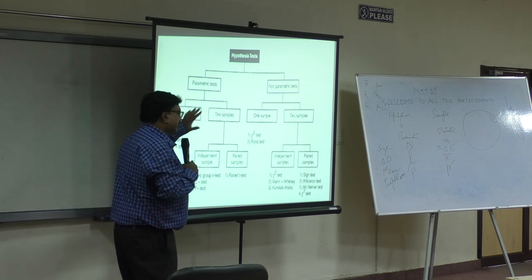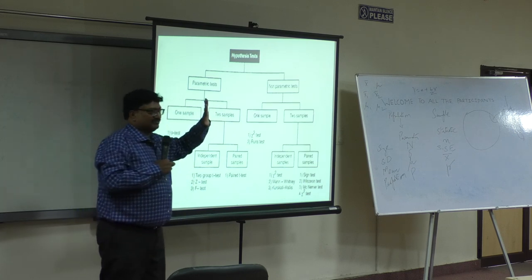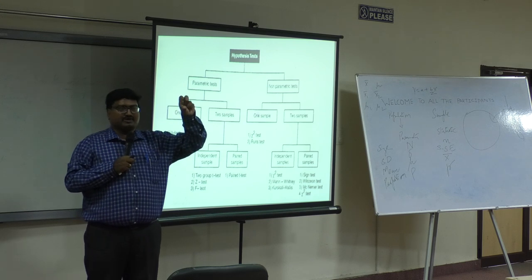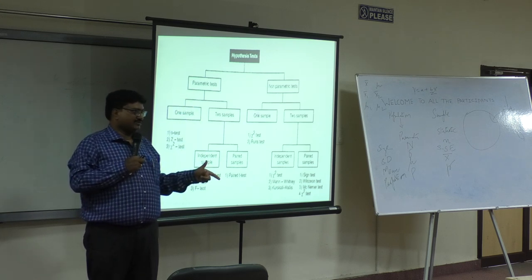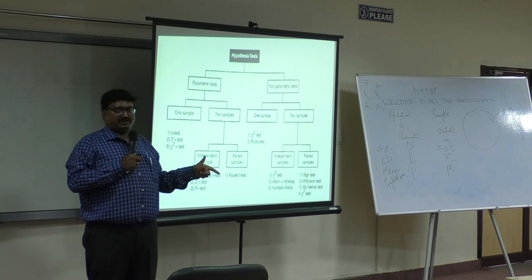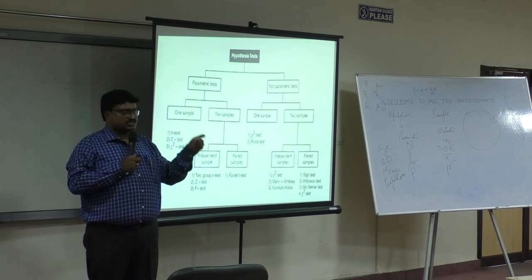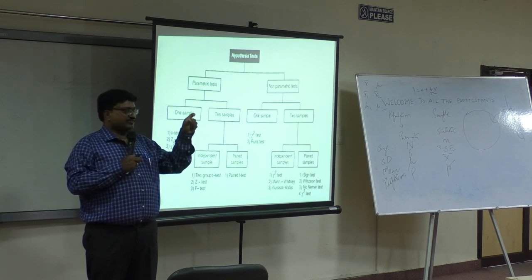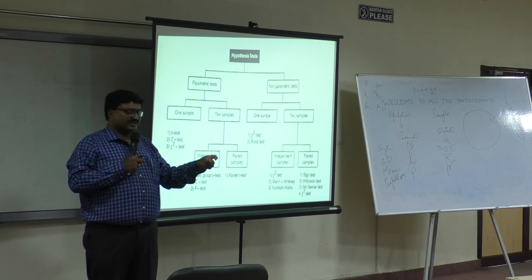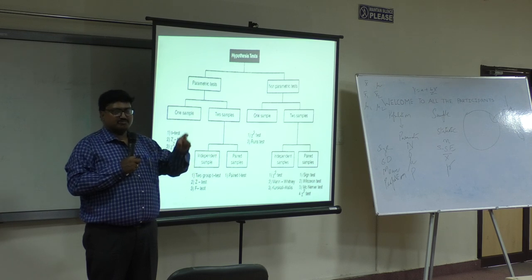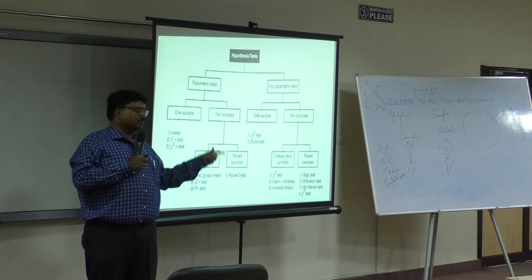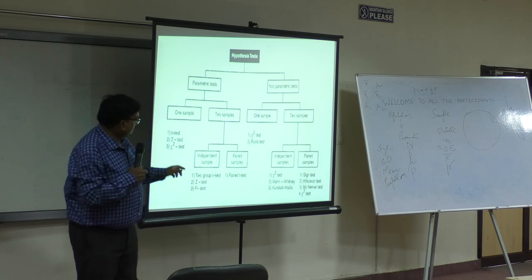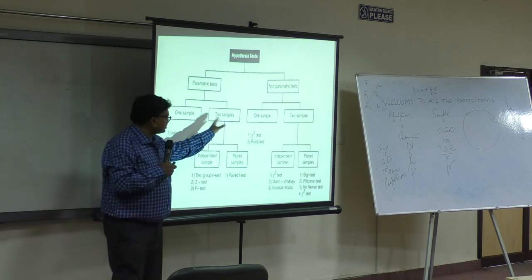Z-test is of five types: difference between sample mean and population mean — that is one sample test; difference between two sample means; difference between two standard errors; difference between sample proportion and population proportion; and difference between two sample proportions. So here I am talking about two sample tests.